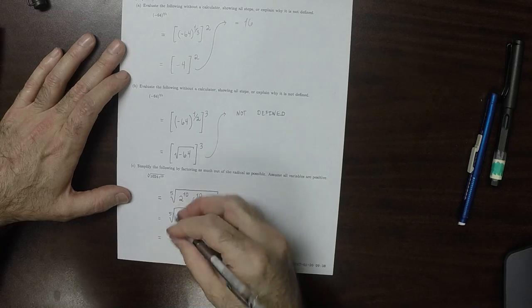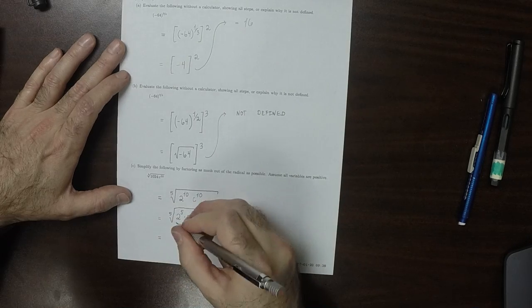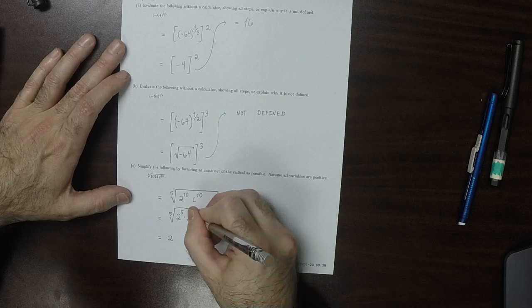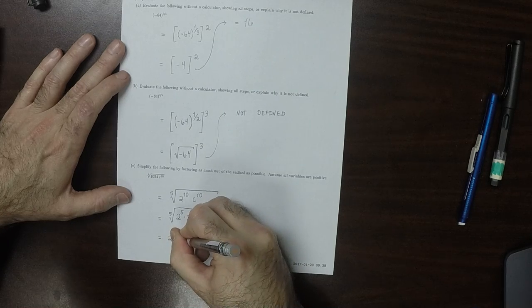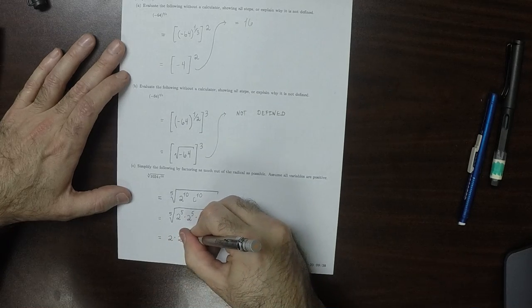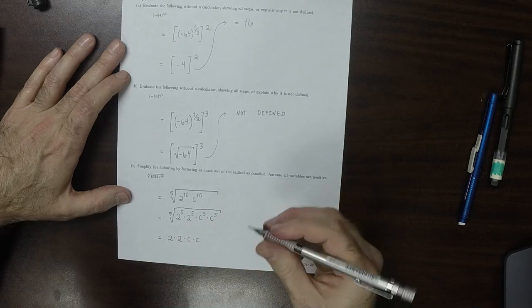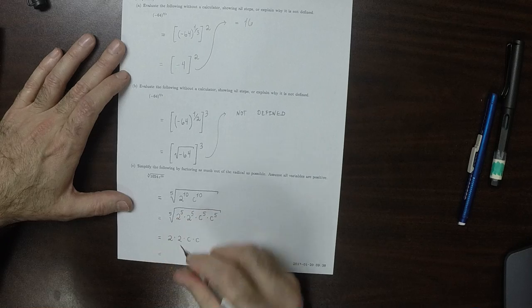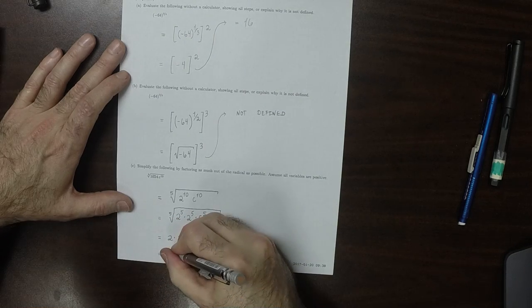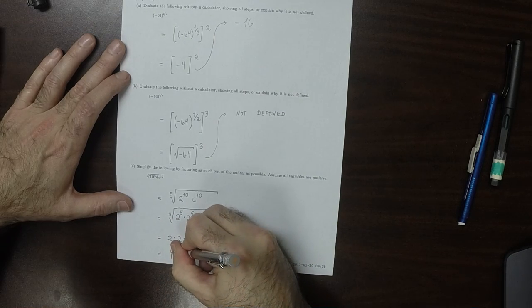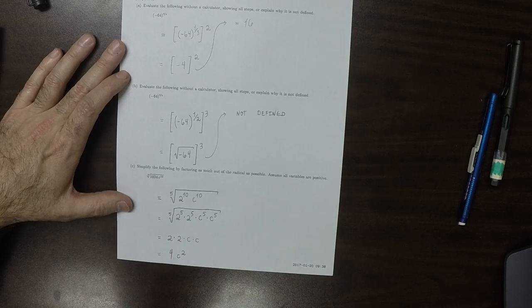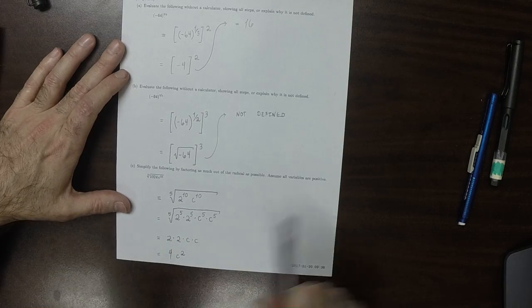So 2 to the 5th comes out as 2, another 2 to the 5th comes out as 2, C to the 5th comes out as C, and another C to the 5th comes out as C. So the answer is 4C squared. That's the answer.